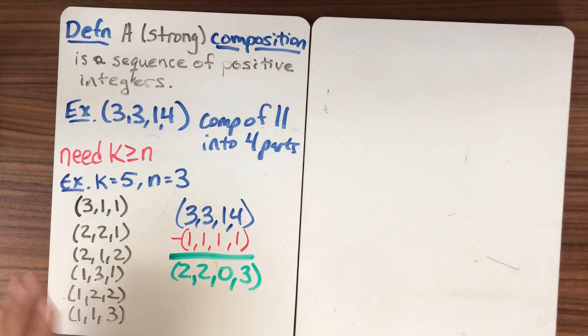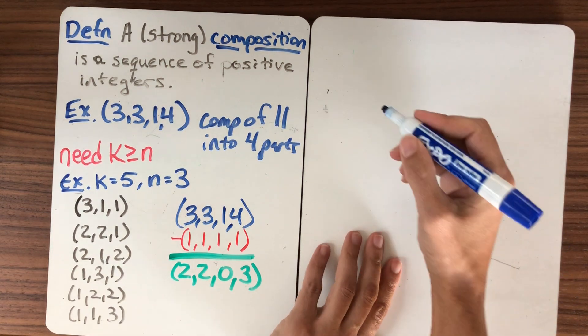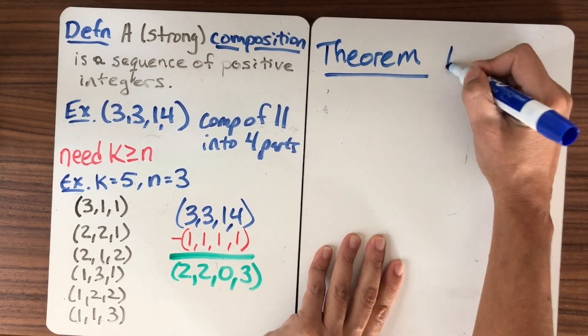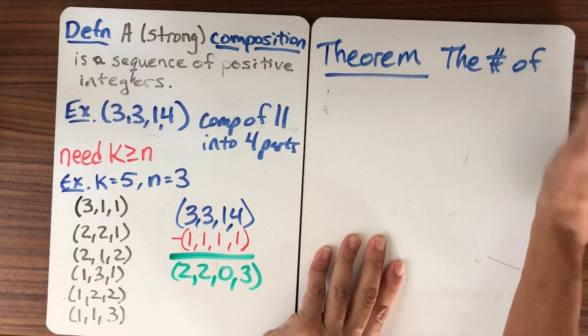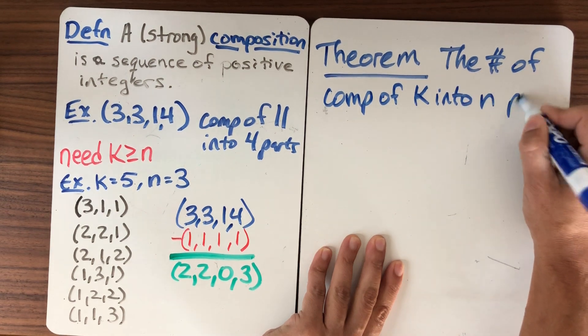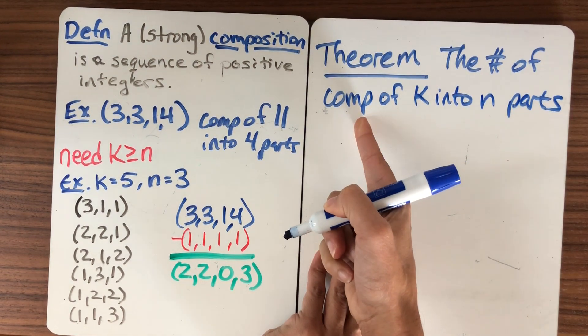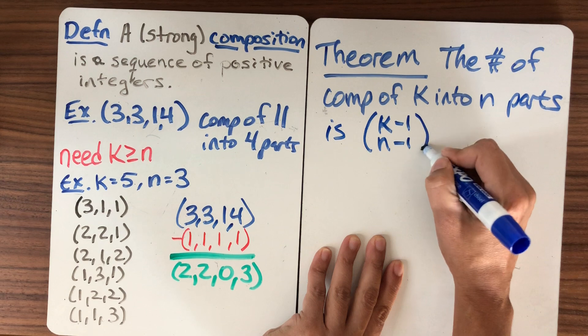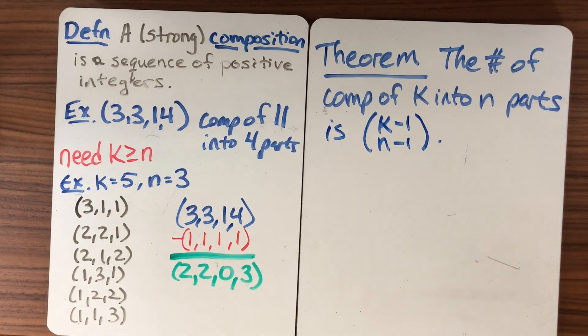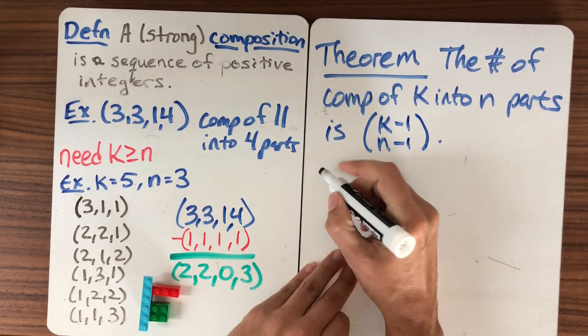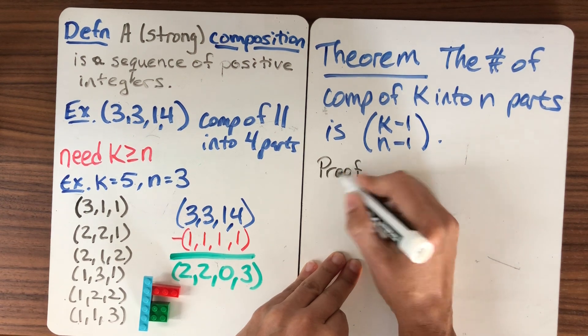So what we've just set up is a bijection between strong and weak compositions. So let's write the theorem, which is counting strong compositions. So the number of compositions of k into n parts, these are strong compositions because I haven't specified, is (k-1) choose (n-1). A very nice simple binomial coefficient. And what was our proof of that? Our proof was really right here.